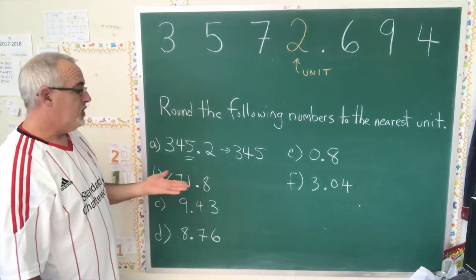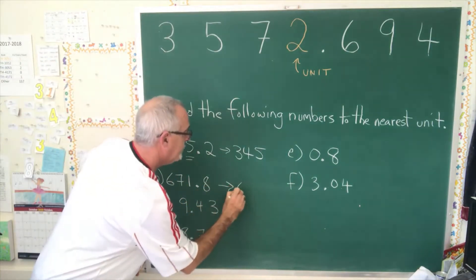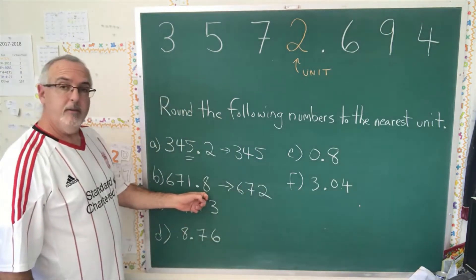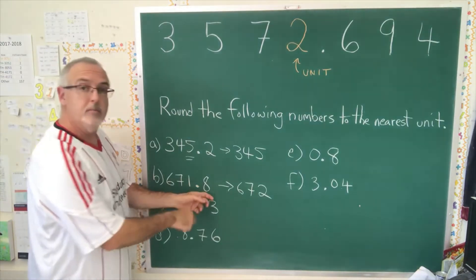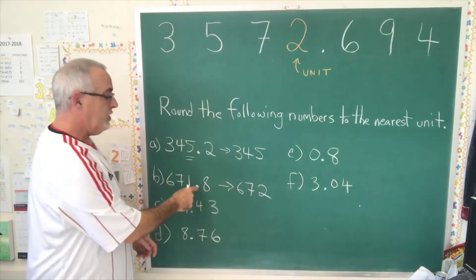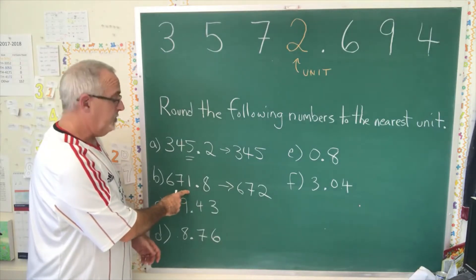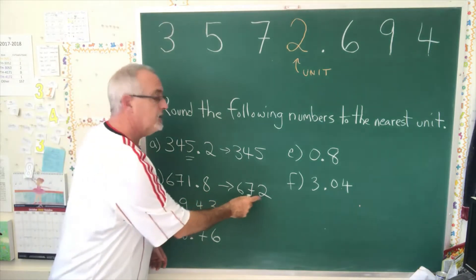671.8, we're doing the same thing except the number to the right of the decimal is bigger than 4. And when that digit is bigger than 4, we round up. Meaning we take this unit's number and we bump it up by 1. So 671.8 becomes 672.